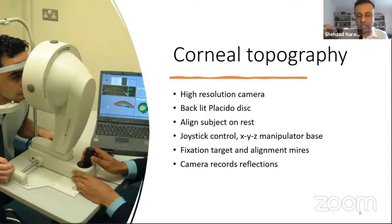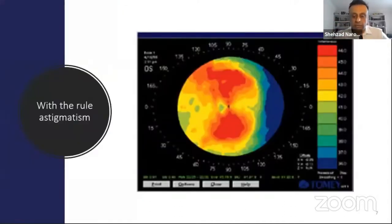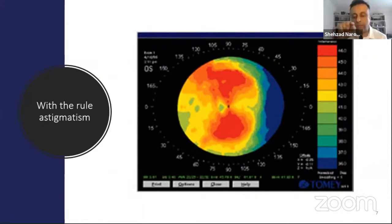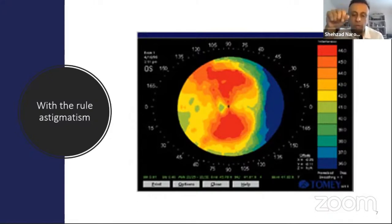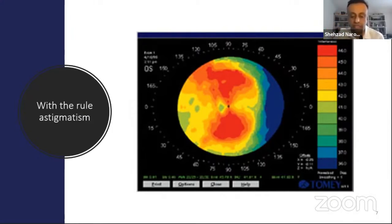In a typical with-the-rule astigmatism topography picture, you can see hot colors in the vertical meridian with almost equal steepness above and below the midpoint — that's regular astigmatism. It's with-the-rule because the vertical meridian is steepest. On refraction, this patient would have a negative cylinder in the horizontal axis of their spectacle prescription.